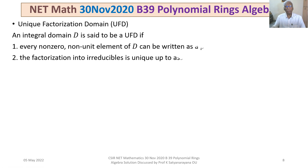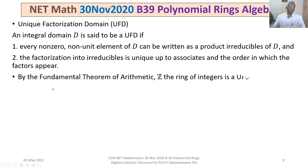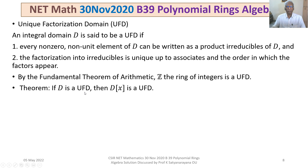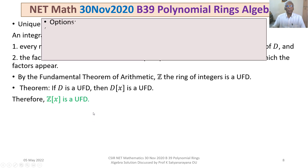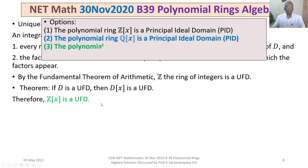By the famous fundamental theorem of arithmetic, the ring of integers Z is a UFD. We also have the result that if D is a UFD, then the polynomial ring D[X] is also a UFD. Since Z is a UFD, the polynomial ring Z[X] is a UFD. This means option 3 is true.